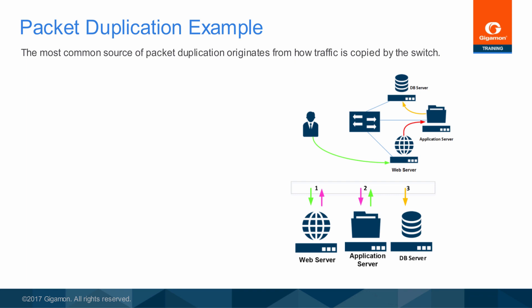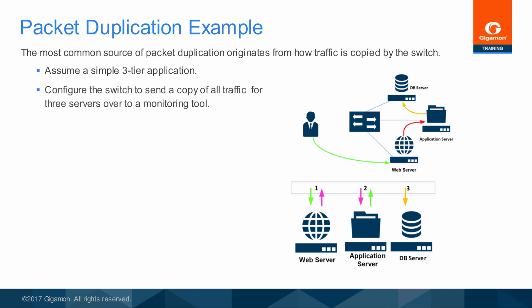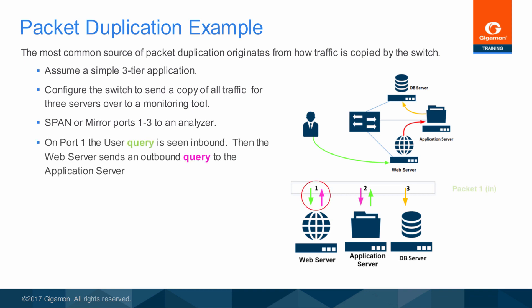As a simplified example, assume there is a three-tier application being accessed by a user. For monitoring purposes, you have spanned each of the three ports servers are attached to. When the user query reaches the web server on port 1, a copy of that packet is sent to the analyzer. The web server needs information from the application server to respond, so it sends a second-tier query out of port 1, which is also sent to the analyzer.